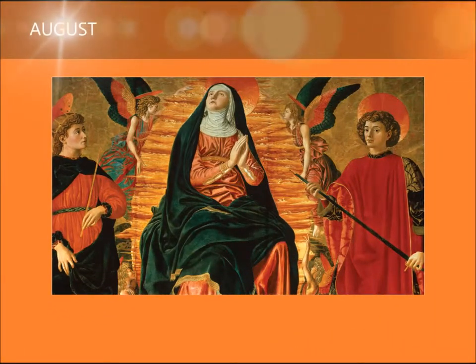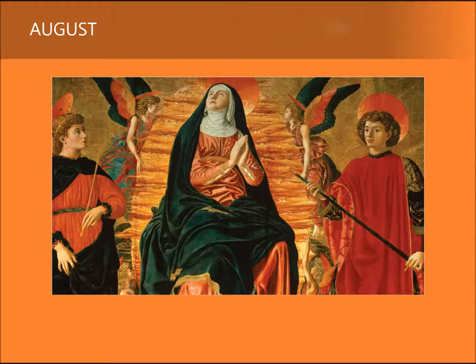August: The Assumption of the Virgin and the Saints Julian and Miniato. 1449–1450, by Andrea del Castagno. Although the Scriptures do not relate the details surrounding Mary's final days, the tradition that Christ's mother was assumed bodily into heaven dates to the early Christian era. The miraculous event, known as the Assumption of the Virgin, features in Italian art from at least the 14th century.